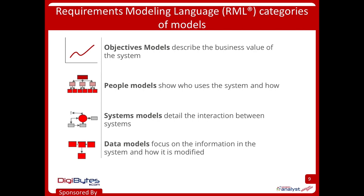Things like process flows would be a people model, as well as screen mockups — thinking about how users can interact with the screen. System models are all about focusing on how the systems themselves behave, how they interact with one another, what they look like, how they interact with the user. And then our data models are those things that focus on the information that the end users care about and the life cycle of that information. That's what we're going to focus on today — that fourth category.